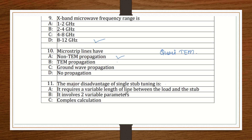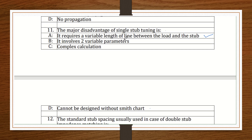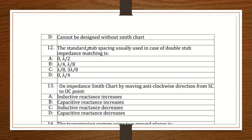Question 11: The major disadvantage of single stub tuning is that it requires a variable length of line between the load and the stub. A small variation causes the line length to change — this is the disadvantage. Because of this, we can use double stub tuning for more precise matching. Question 12: Standard stub spacing used in double stub impedance matching is always a multiple of lambda/8. The correct option is lambda/8 and 3 lambda/8.